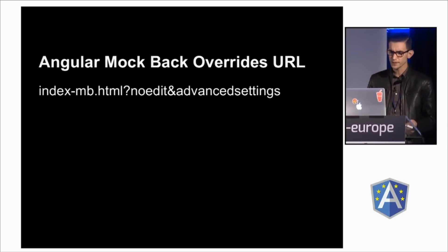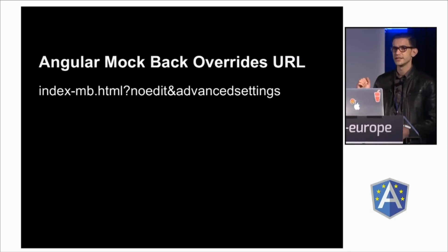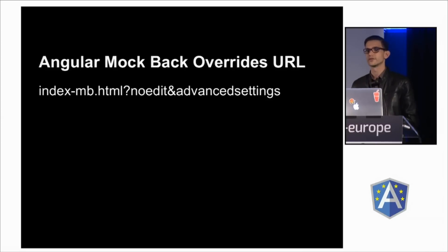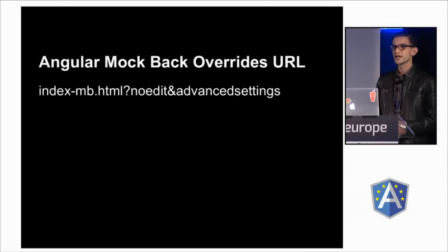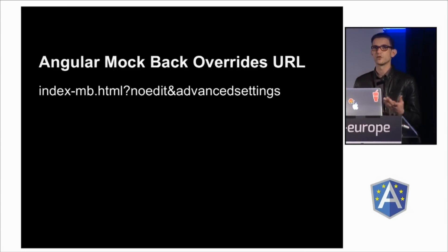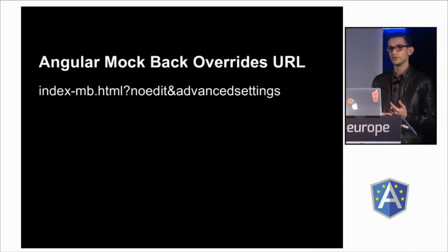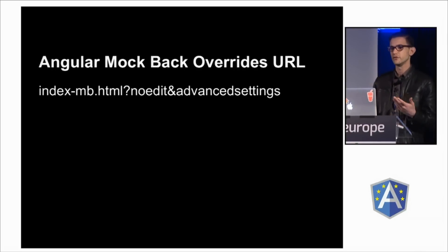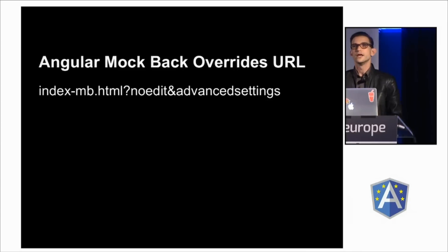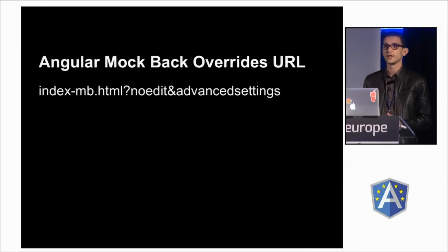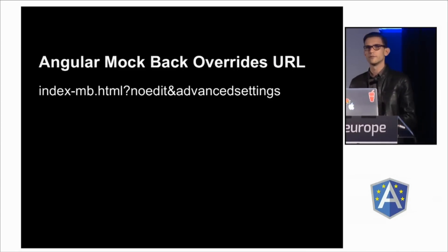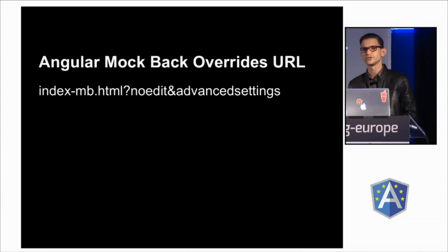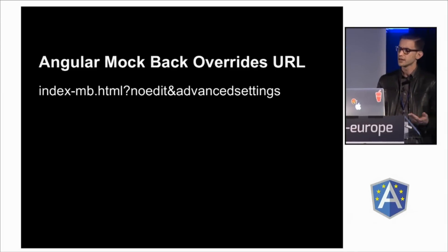How do you actually use these overrides? You just pass them in as a query parameter right after your index, so that way it doesn't conflict with your router. You can mix and match and stack as many overrides as you want. In this example, I'm using view-only for the user with no-edit, and I'm also showing advanced settings — so let's say you couldn't see advanced settings, now you can. This is extremely useful because you don't have to log out of an account that has super permissions just to check something that has less permissions. This saves you a lot of time.